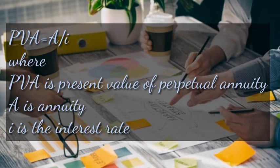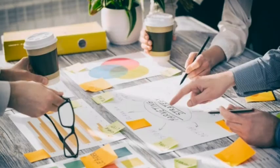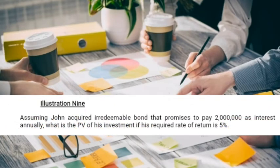Perpetual annuity has a formula: Present Value of Perpetual Annuity equals A divided by I, where PV is the present value of the perpetual annuity, A is the annuity payment, and I is the interest rate. Let's look at an example.